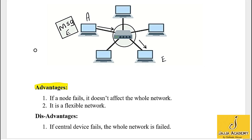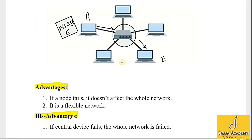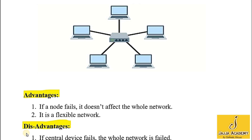Now let's see the advantages and disadvantages of star topology. If one node fails, it doesn't affect the whole network. For example, if one computer stops working, other computers can still communicate with each other using the central device. The second advantage is it is a very flexible network — it is very simple to remove or add a node to the network. The disadvantage of star topology is if the central device fails, the whole network fails, as communication depends on the central device. If the central device is not working, communication is not possible.